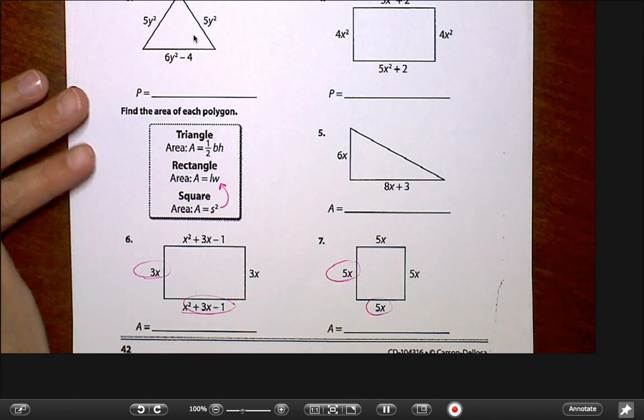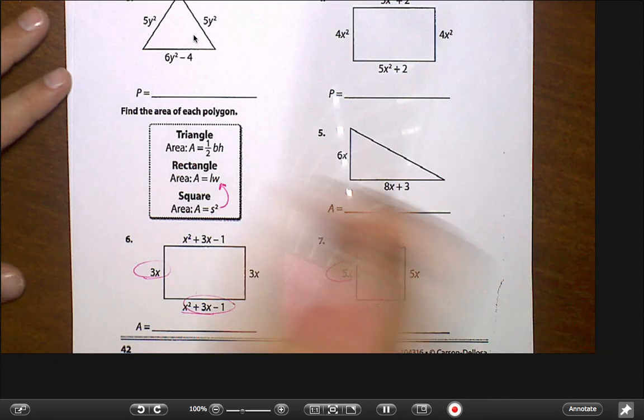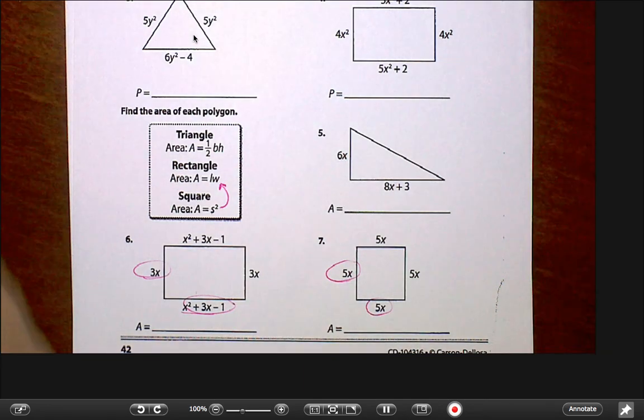So your only assignment for today is to finish 2 through 7 here. The top half is doing perimeter. The bottom half is doing area. And we will check this in class tomorrow.